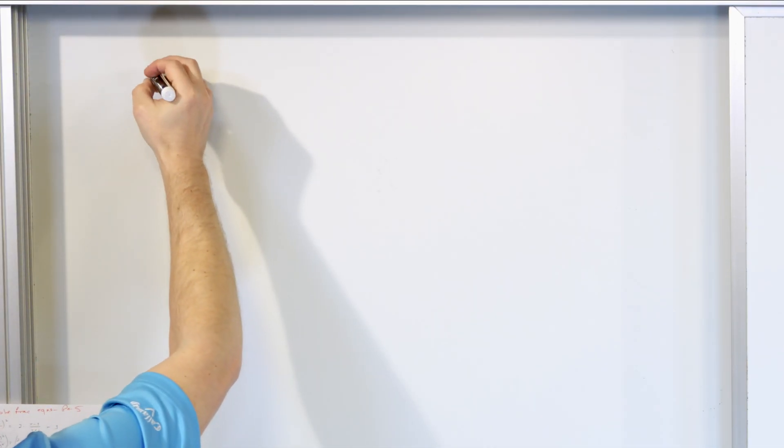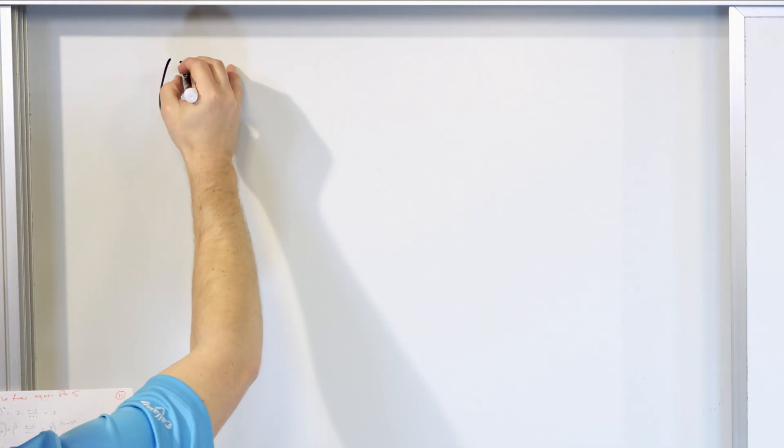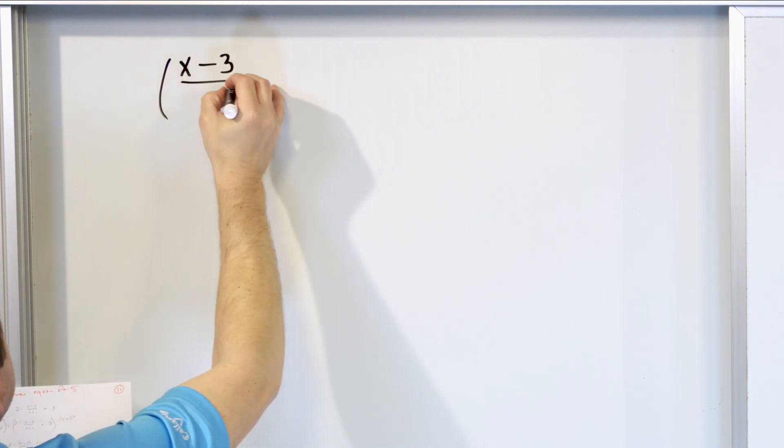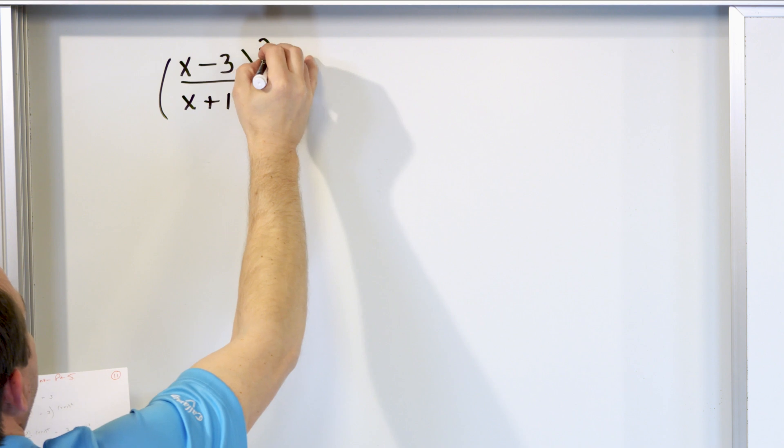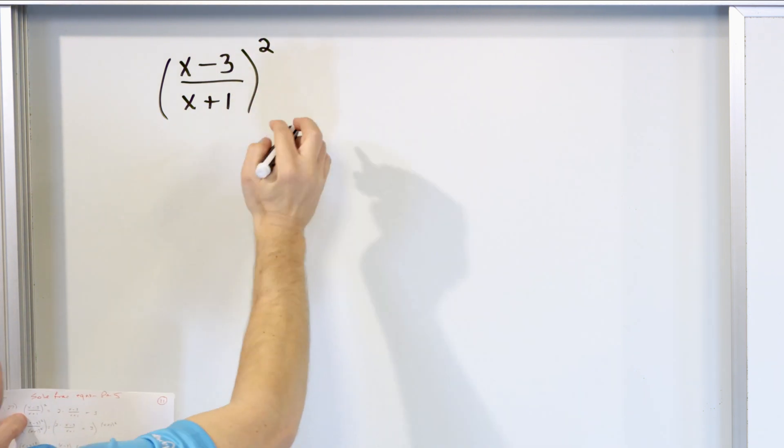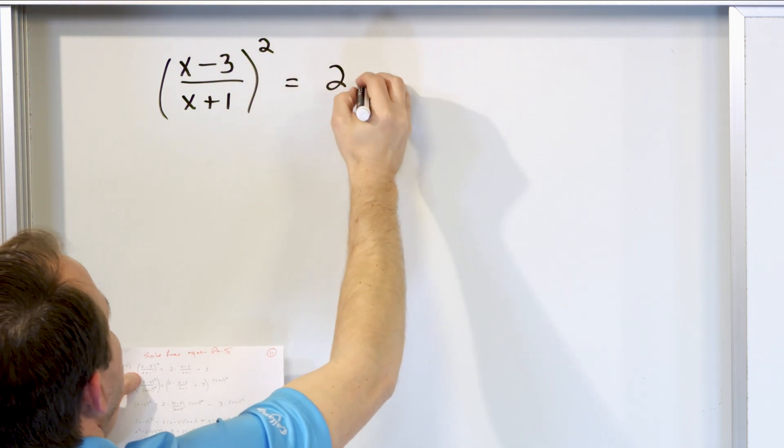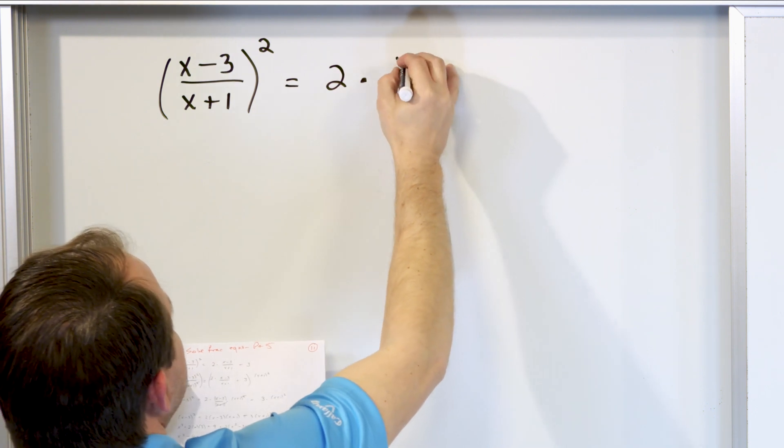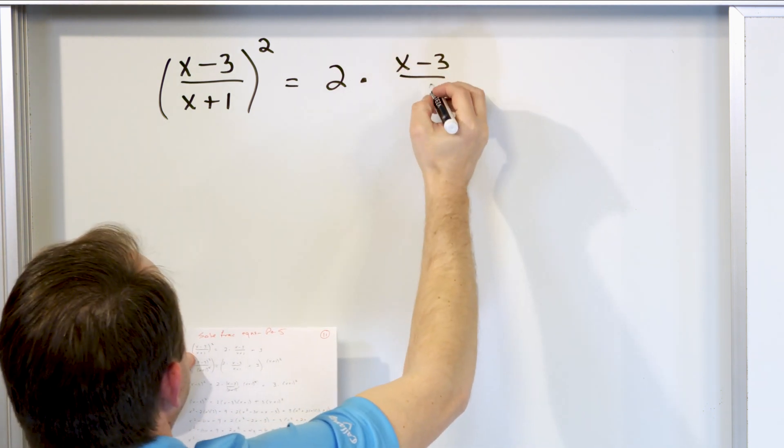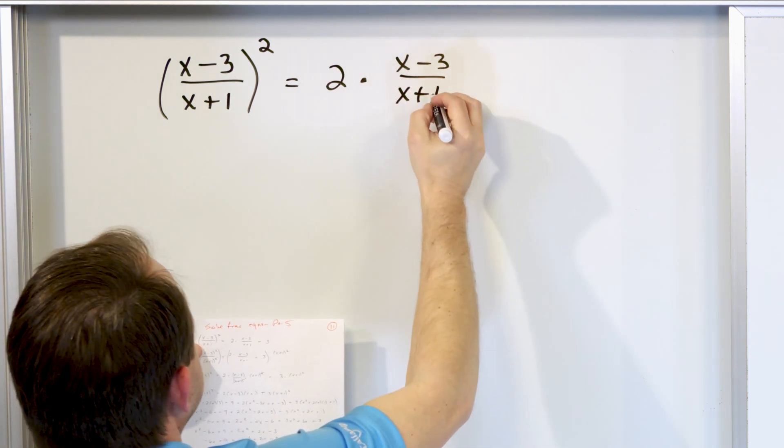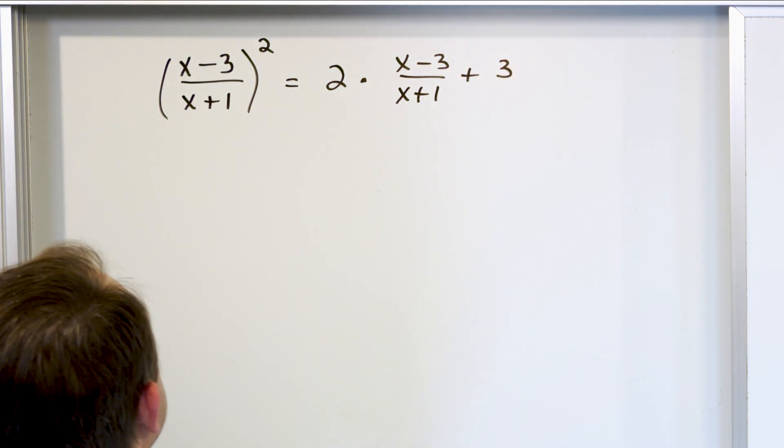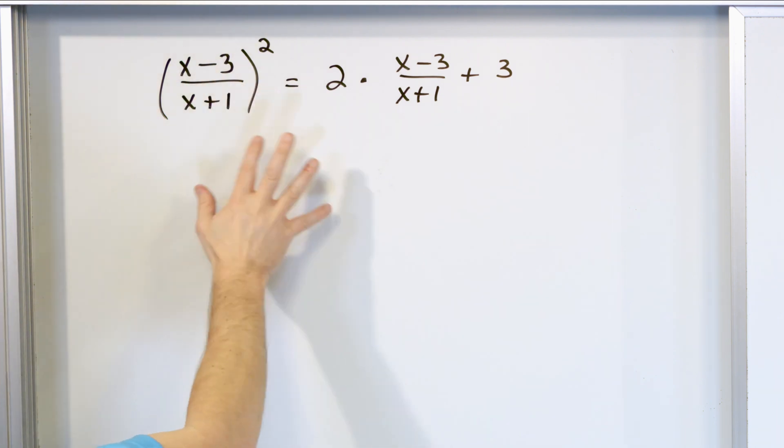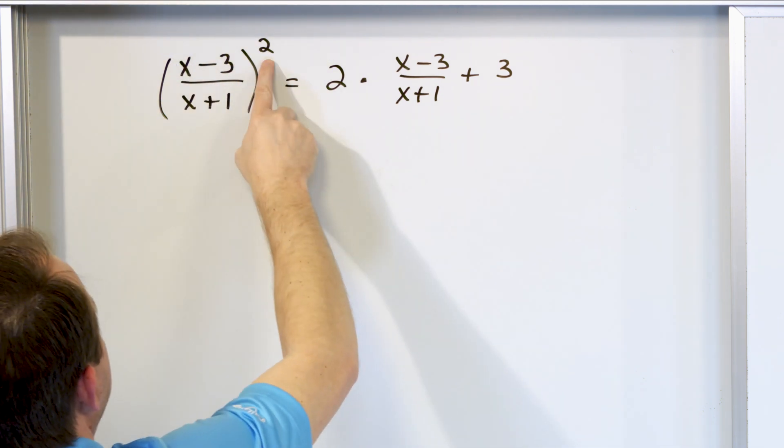So the first one is really kind of interesting. It's a little different than what we've had. Here's the problem. It is (x-3)/(x+1) quantity squared. So that's a little different than what we've seen before. On the right hand side, we have 2 times the fraction (x-3)/(x+1) plus 3. So this looks a little bit different for a few different reasons.